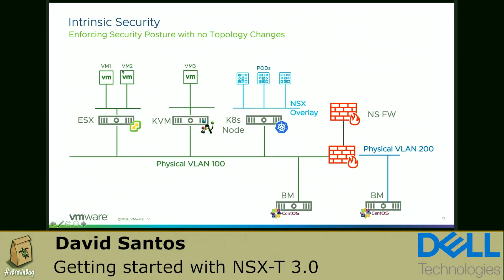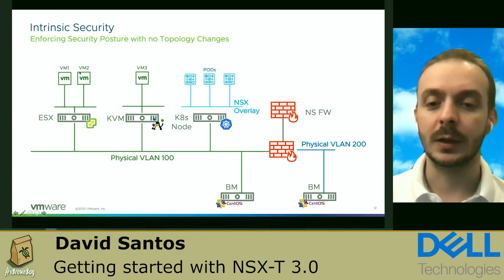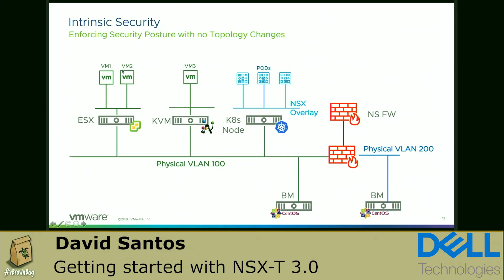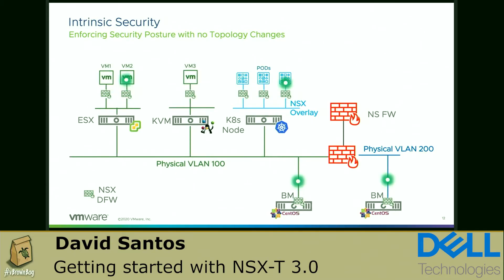The next step is security. We can use NSX security with overlay or without it — we can deploy a security posture in the environment, even without using NSX overlay, which means deploying it using a regular VLAN. In this case, we have VLAN 100 and VLAN 200 with vSphere workloads, KVM, Kubernetes, and some bare metal hosts. NSX will deploy an element called DFW — the distributed firewall of NSX.